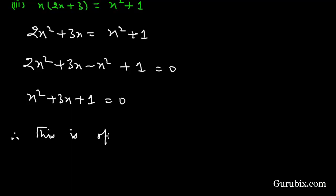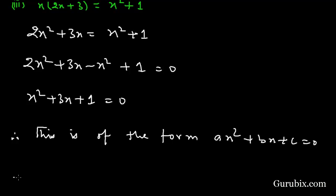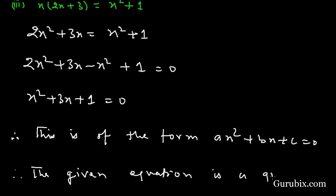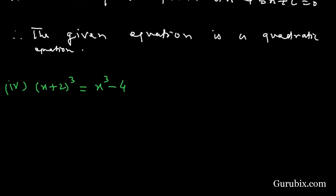We observe that x² + 3x + 1 = 0 is of the form ax² + bx + c = 0. Therefore, the given equation is a quadratic equation. That is the solution of Part 3. Let us move to Part 4.